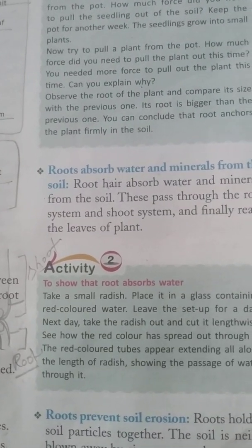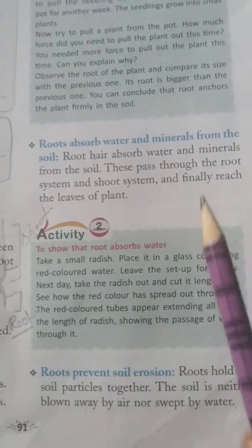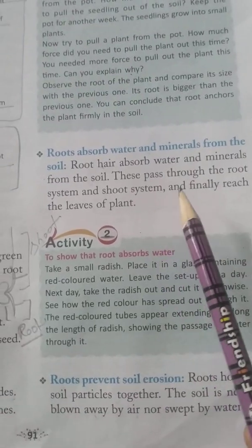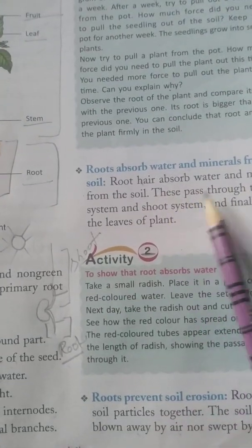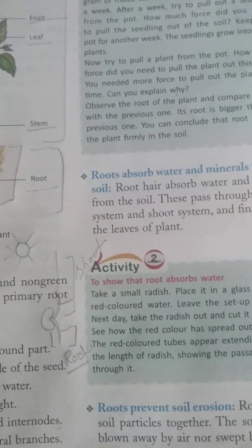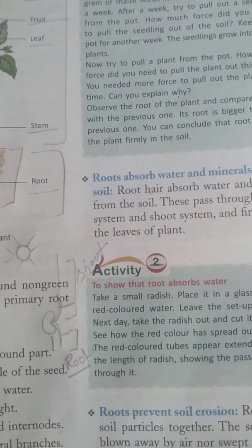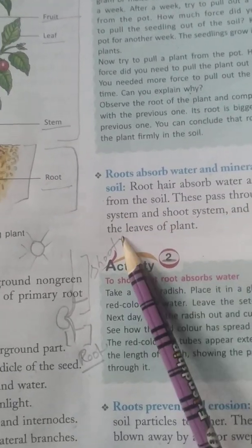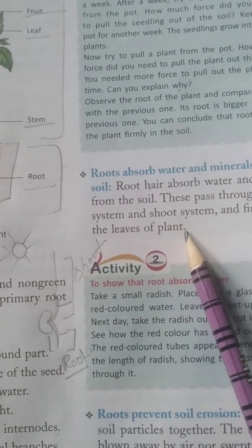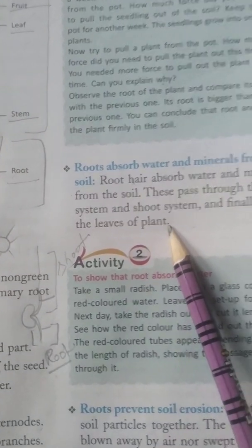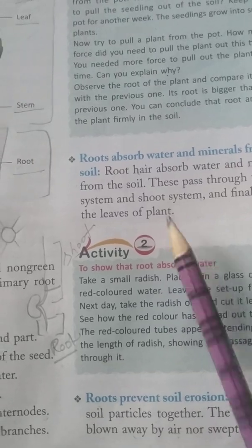This food is manufactured by the process called photosynthesis. The water and minerals pass through the root system and the shoot system and finally reach the leaves of the plant, where the plant synthesizes its food.